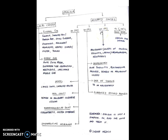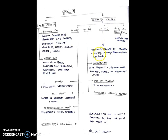Otalgia can also be caused due to a pathology in the vallecula or epiglottis, esophagus, or laryngopharynx. This is due to the innervation of the ear by the tenth cranial nerve, via which malignancy or ulcers of the vallecula, epiglottis, larynx, laryngopharynx, and esophagus can cause otalgia. Additionally, cervical spine injuries and cervical spondylitis can cause otalgia due to innervation of the ear by C2 and C3 spinal nerves.